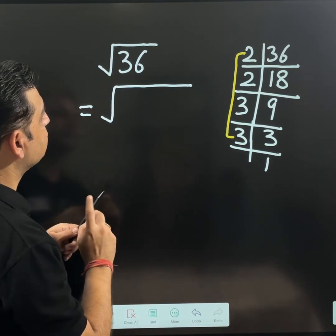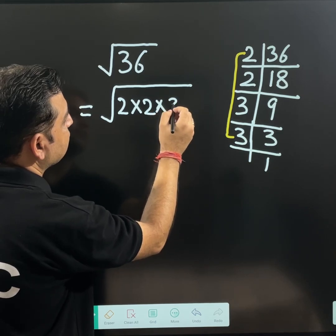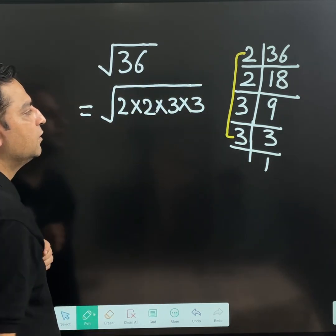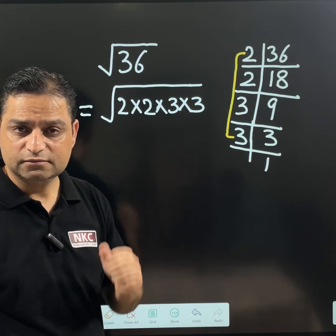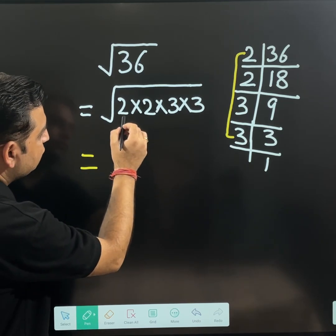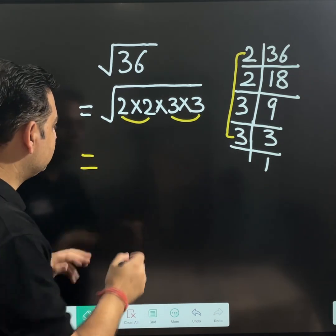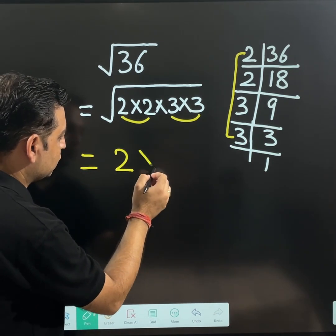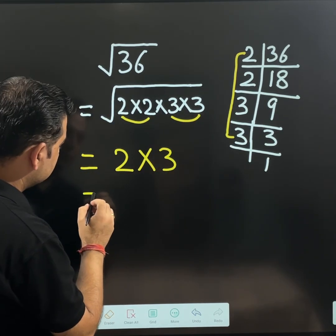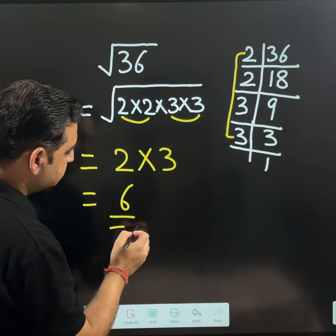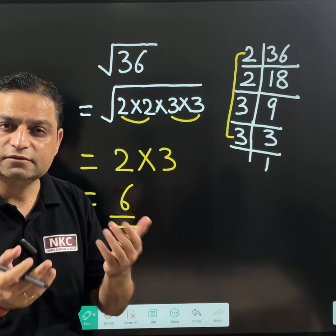So, I can split 36 as 2 times 2 times 3 times 3. I hope it is clear. Now, next step was to make the pairs. I am going to make pair of 2, pair of 3. See, 2 pairs are available. First pair will give me 1, 2 outside the square root symbol. Second pair, it will give me 3. Just multiply them. We will get our final answer. I hope prime factorization method is clear now.